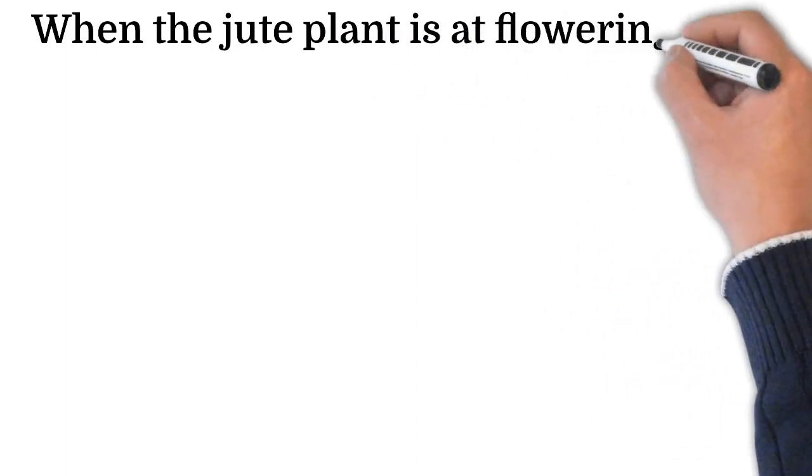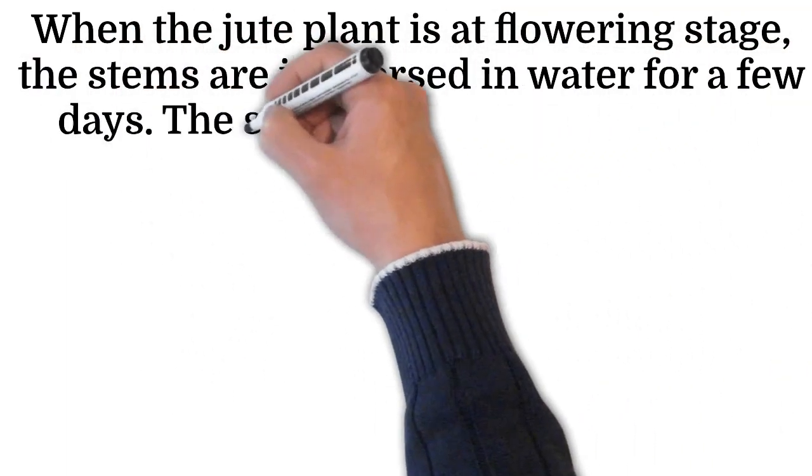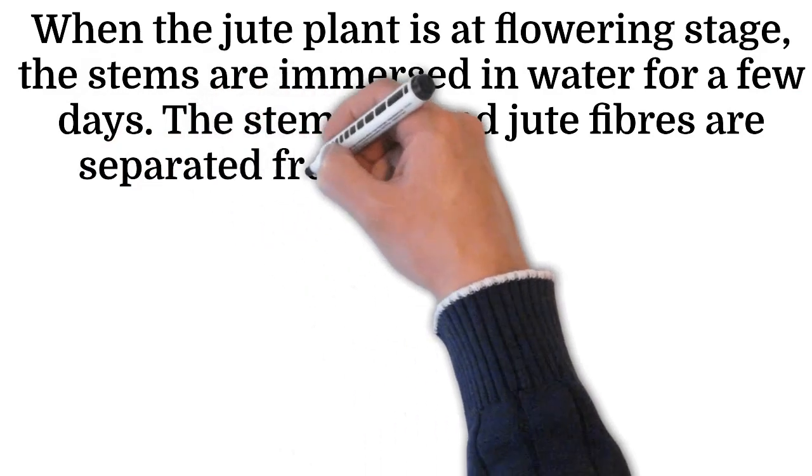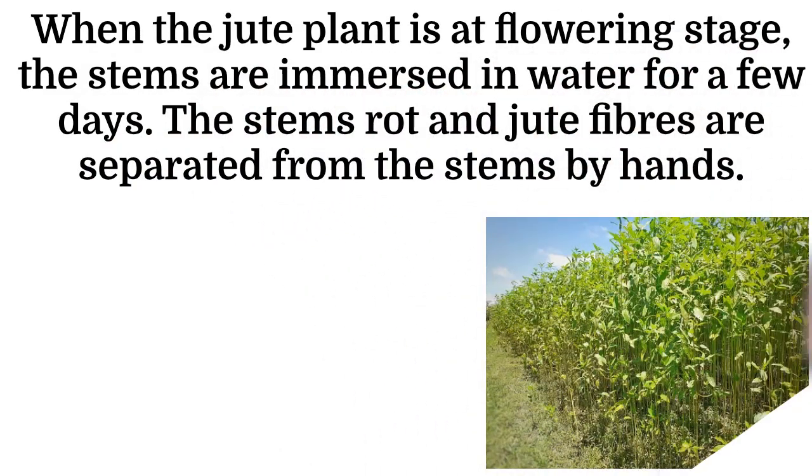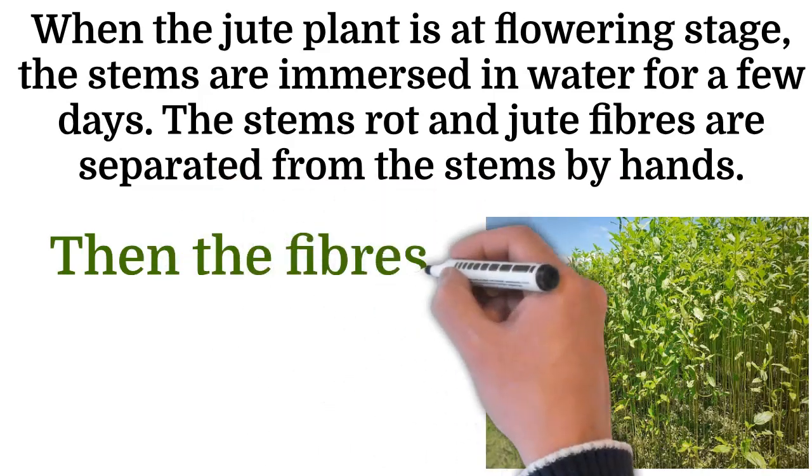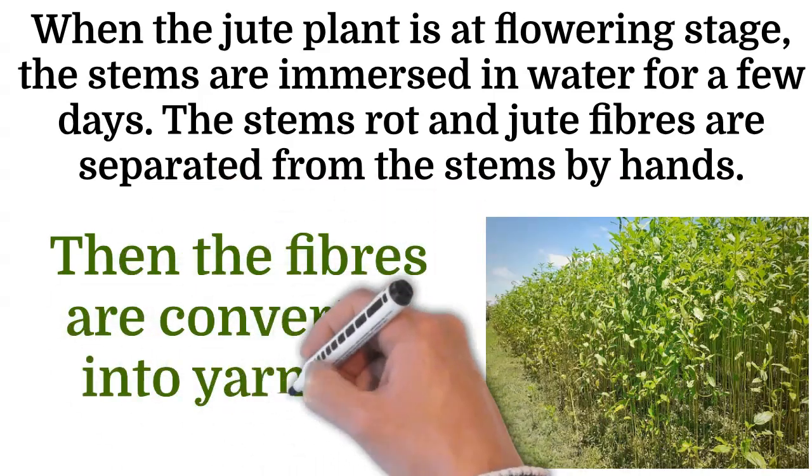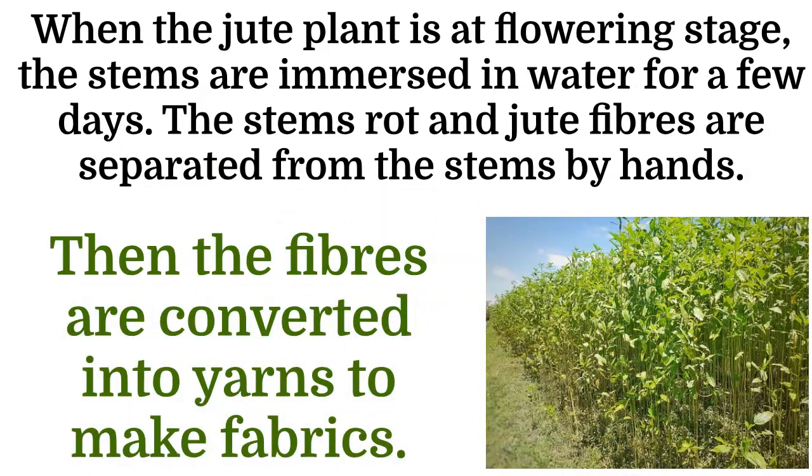When the jute plant is at flowering stage, the stems are immersed in water for a few days. The stems rot and jute fibers are separated from the stems by hands. Then the fibers are converted into yarns to make fabrics.